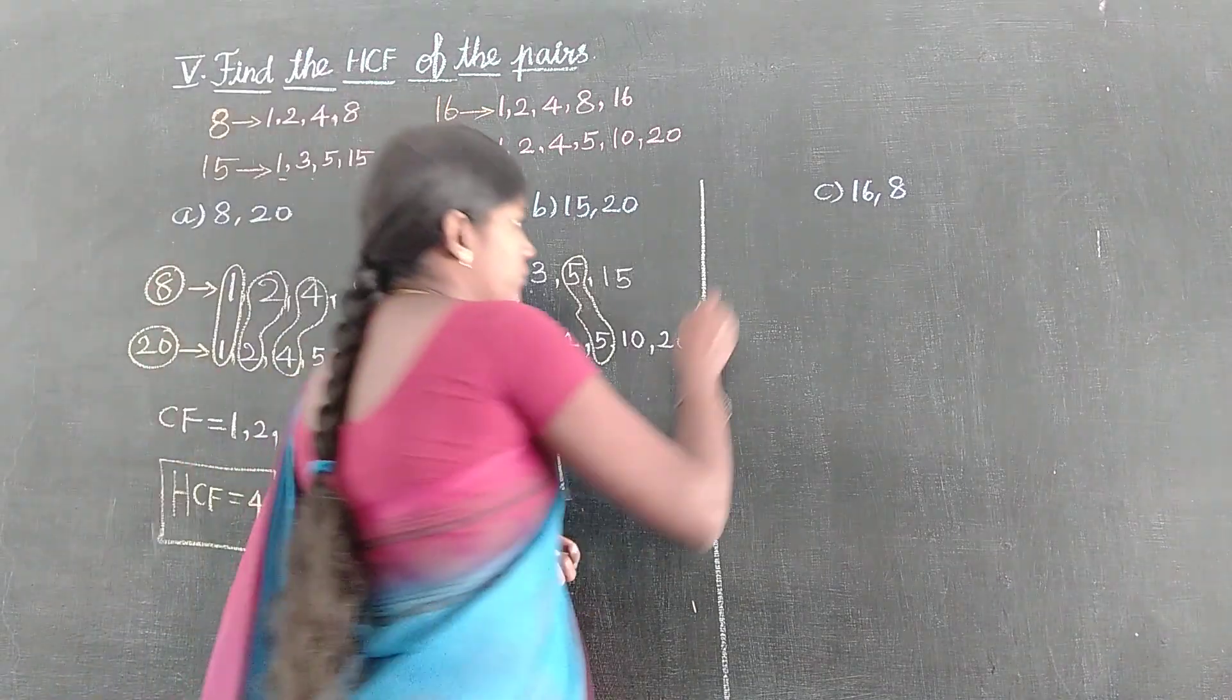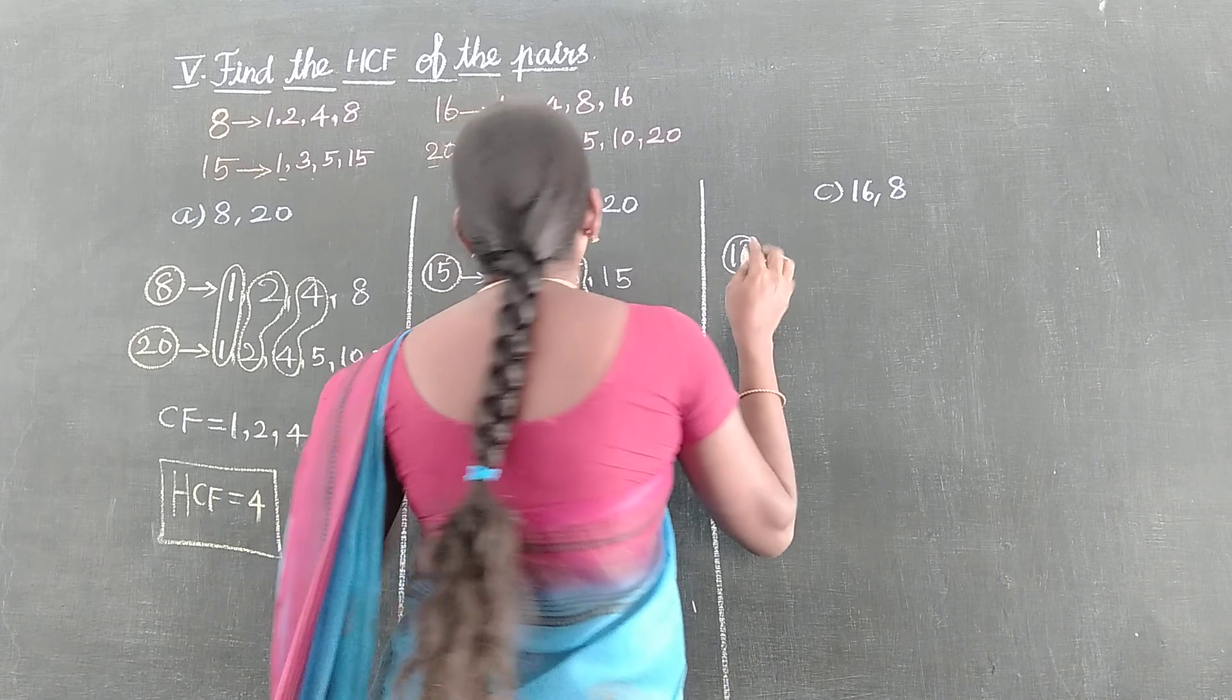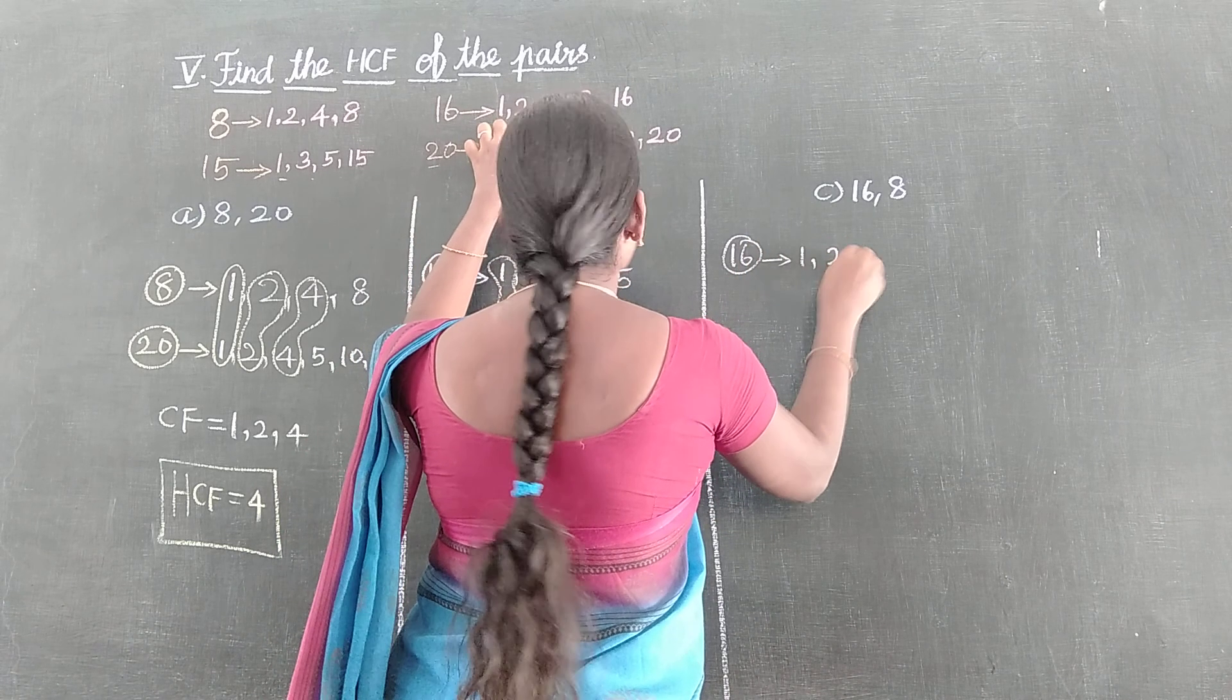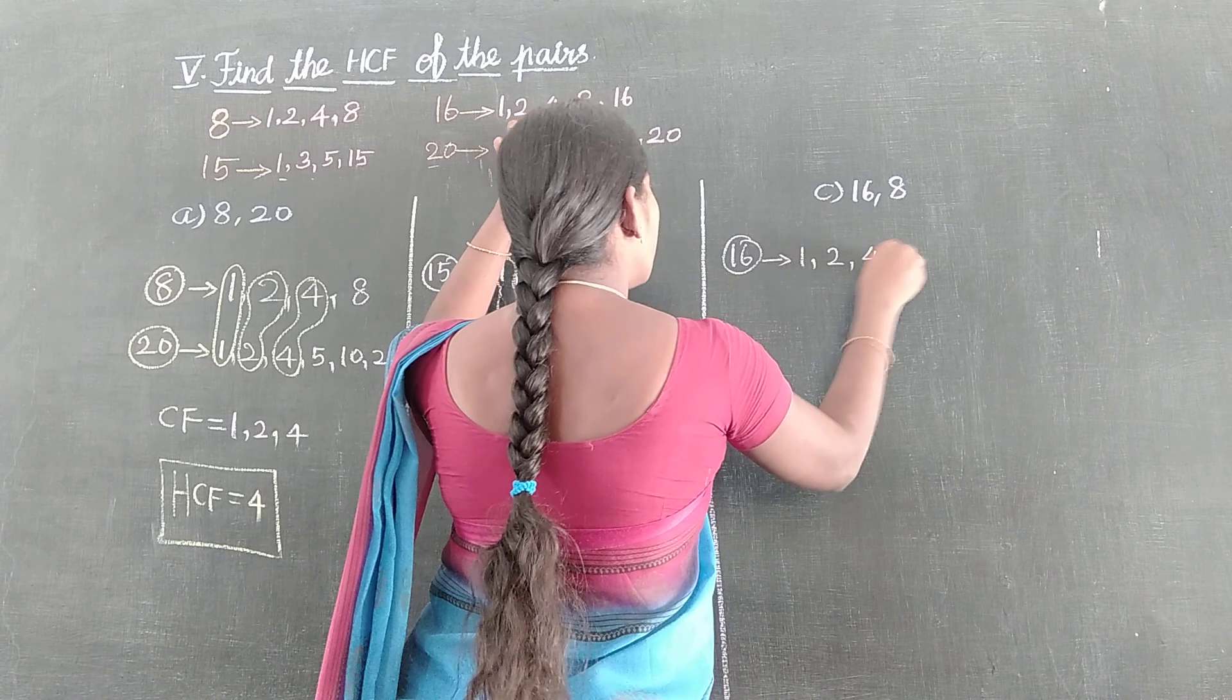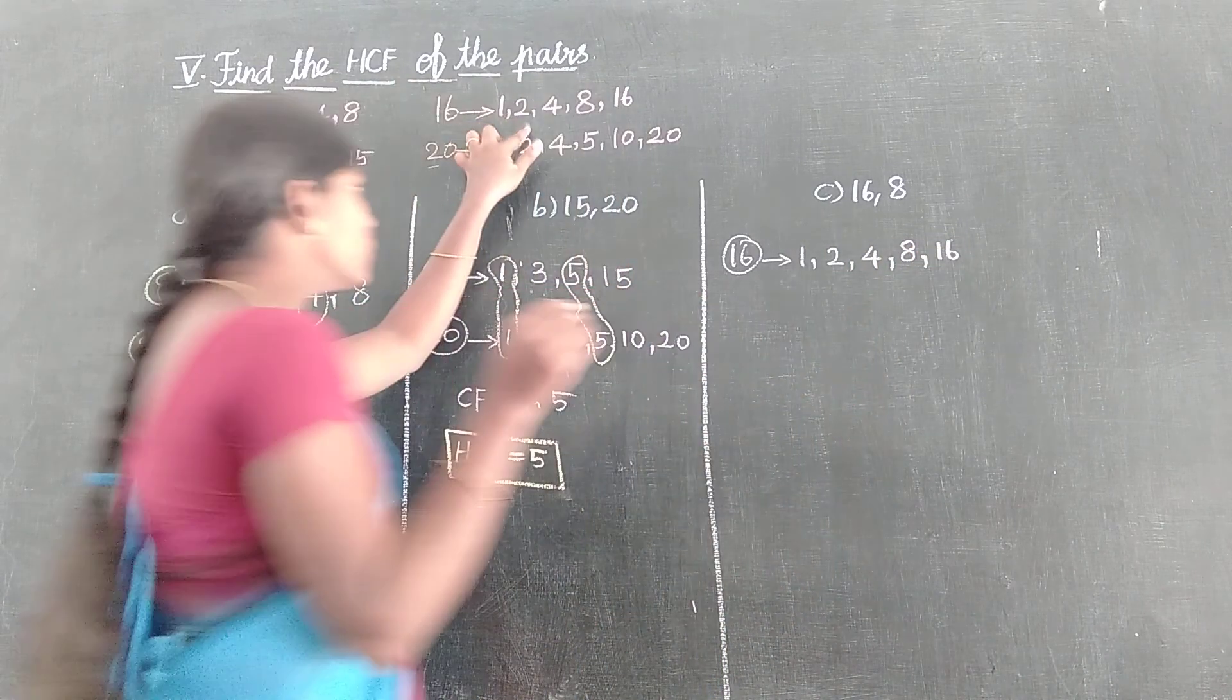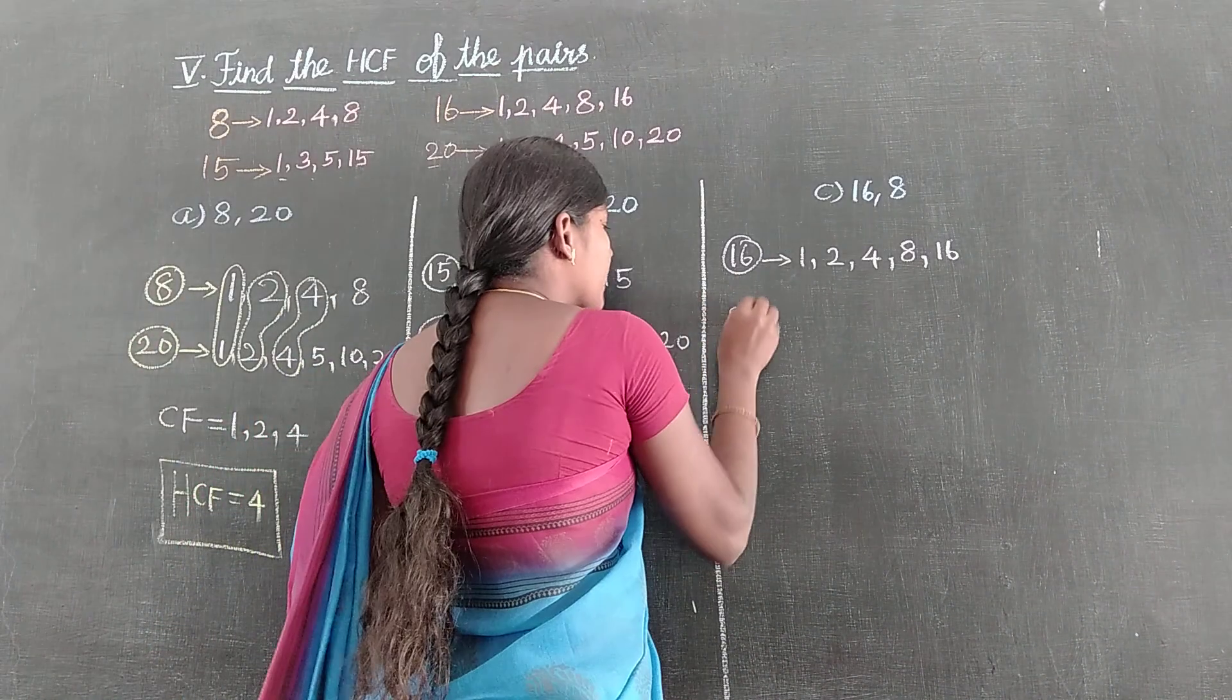Next, 16 and 8. So first 16 corner factors number right, one row. 16: 1, 2, 4, 8, 16. 1, 2, 4, 8, 16.